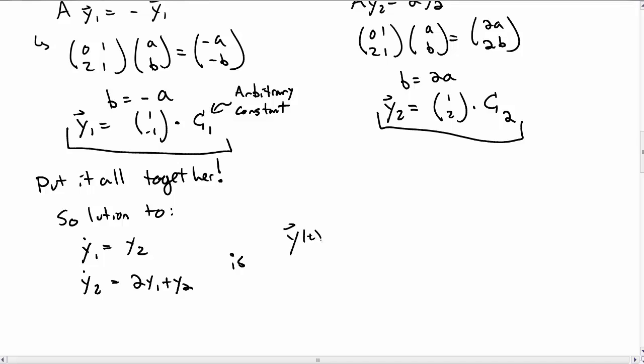And the solution to that is y vector of t is some arbitrary constant times 1, minus 1, e to the minus t, plus some other arbitrary constant times 1, 2, e to the 2t.